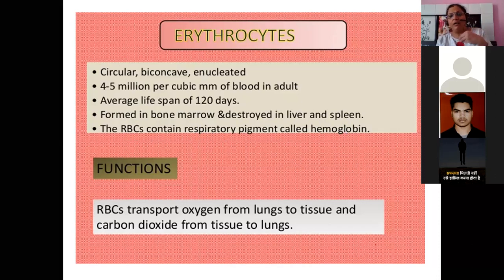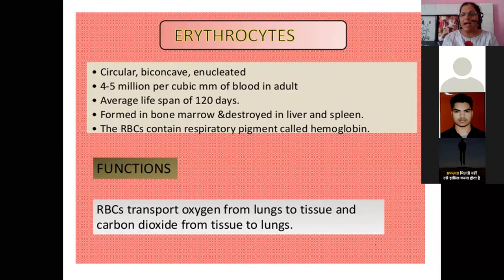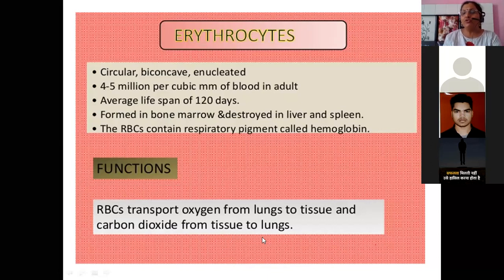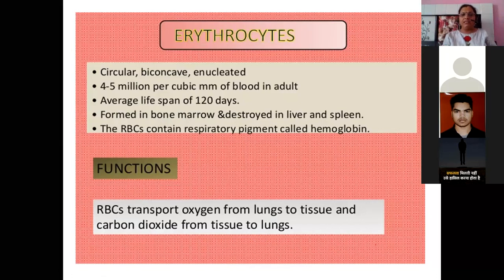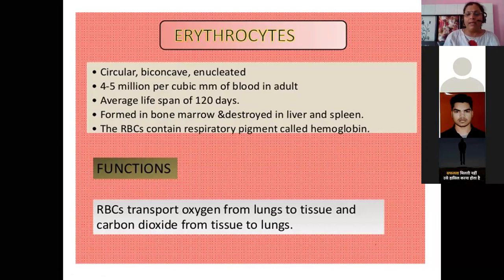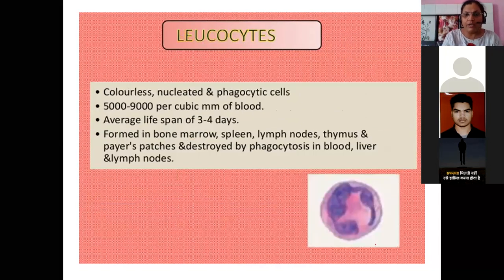RBCs contain a respiratory pigment called hemoglobin. It is called a respiratory pigment because it carries oxygen, which is required for breathing — inhalation and exhalation. Hemoglobin means heme (iron) and globulin (a protein). The function of RBCs is to transport oxygen from the lungs to tissues and carbon dioxide from tissues back to the lungs, maintaining circulation throughout the entire body.